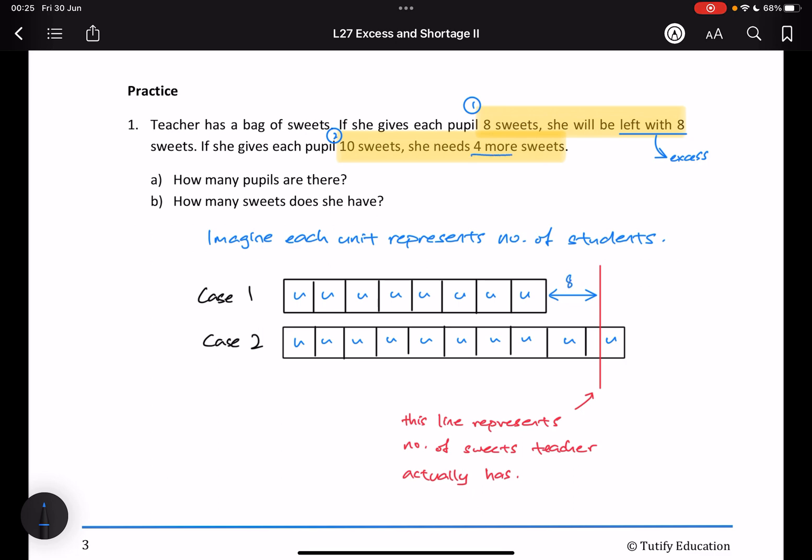Now, let's look at scenario number two. If I would like to give ten sweets to each child, well, unfortunately, I don't have that many sweets. Again, the red line represents how many sweets I have.